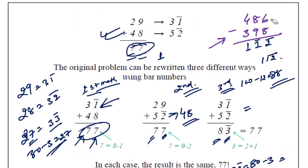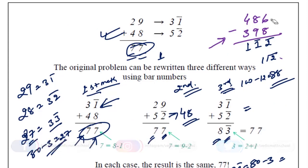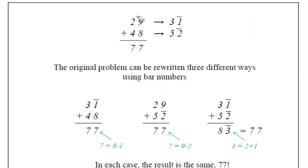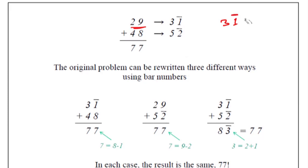Using this bar concept, I am going to explain addition, subtraction, and multiplication. So here we have to add 29 plus 20. We can write down 29 as equal to 31 bar. Because 31 bar is 30 minus 1, which equals 29. So we can write 29 as 31 bar.